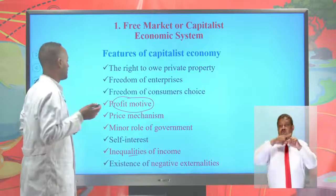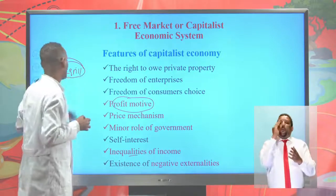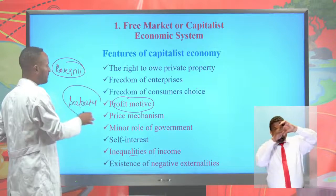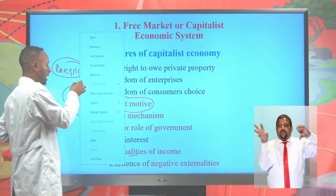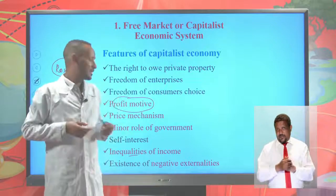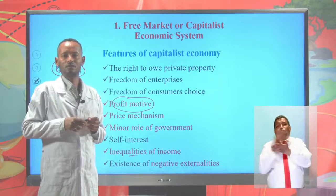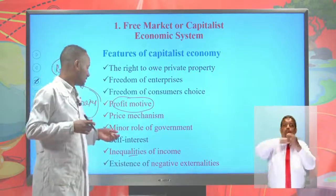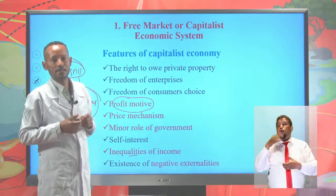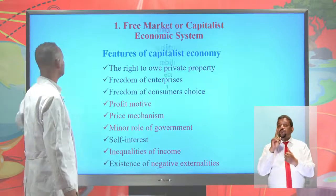For example, positive externalities: there is a rose grower engaged in production of flowers and a beekeeper nearby. If the bees use the flowers to make honey, there is positive externality. An example of negative externality: if there is an industry engaged in manufacturing near residences and there is carbon emission, it affects the livelihood of individuals — that is negative externality. So negative externality is one of the features of the capitalist economic system.